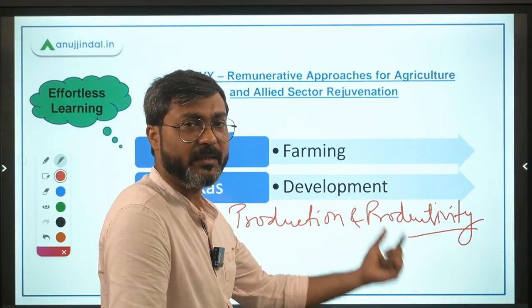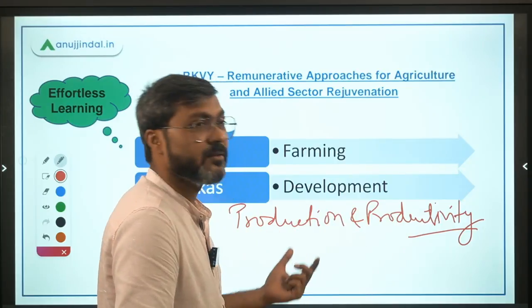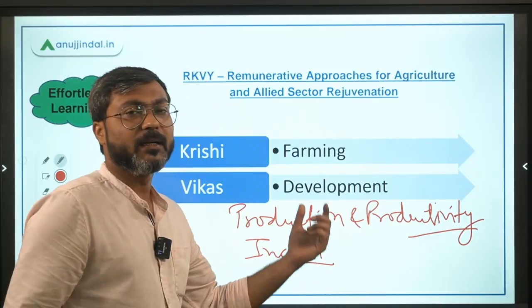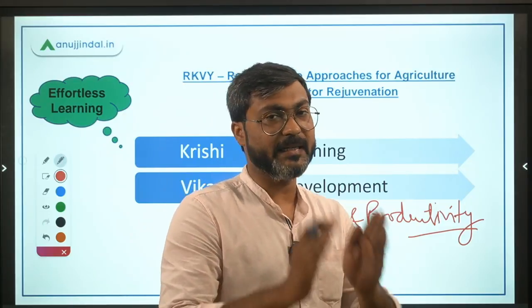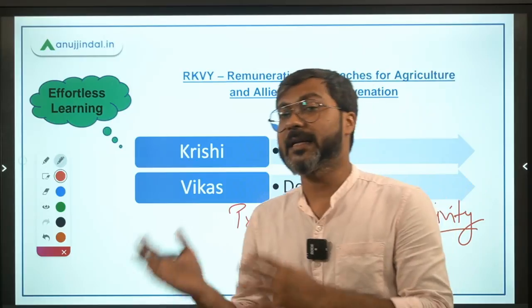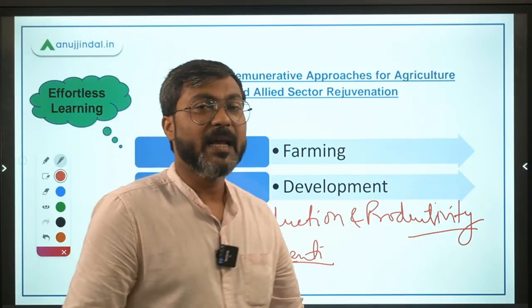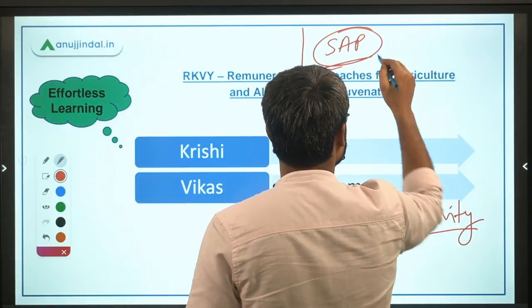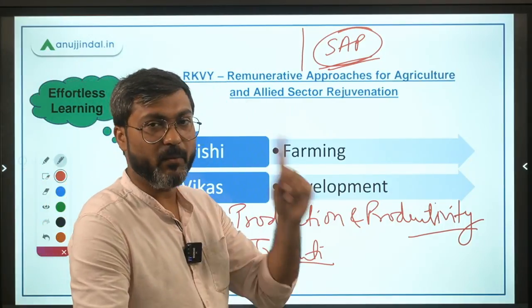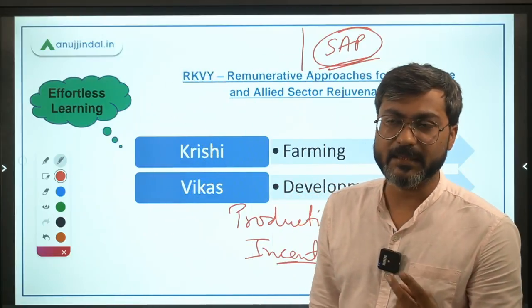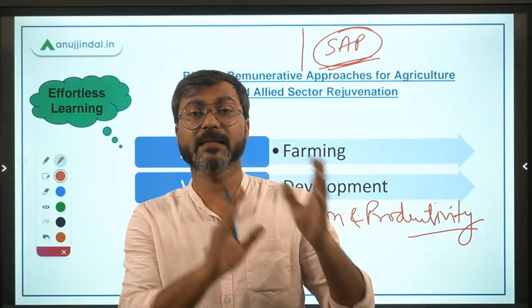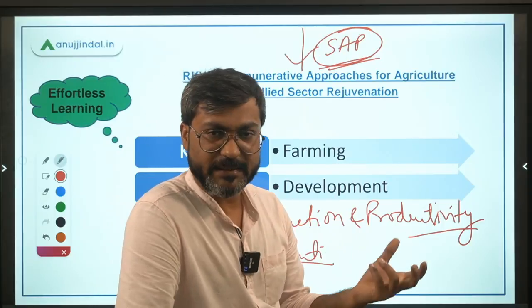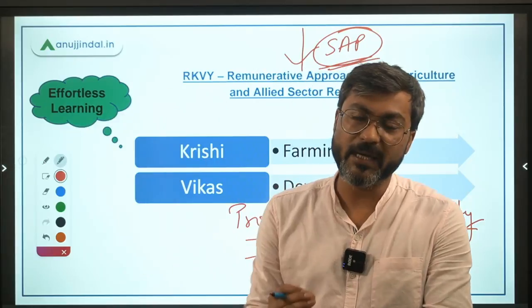Now how is the government enhancing production and productivity? They are incentivizing states for investment — to enhance investment in agriculture and allied sectors. The central government is incentivizing state governments: invest in agriculture and allied sectors and we will incentivize you for it. Also, the central government ensures that every state has a state agricultural plan, through which all funding for projects is channeled.